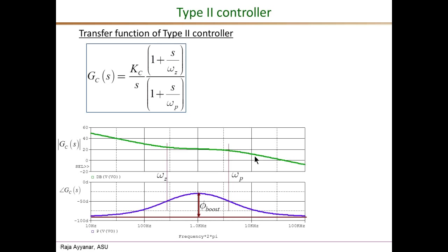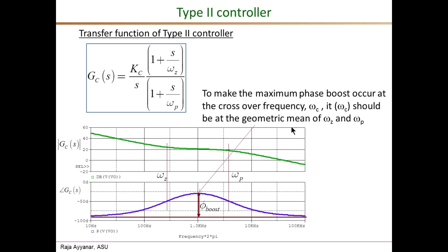The pole eventually adds another minus 20 dB, and at high frequency the magnitude comes down at a slope of minus 20 dB per decade. Looking at the phase plot, at low frequencies well below omega_z the phase angle is minus 90 degrees. The zero tries to bring it up towards zero degrees, but before it can actually reach zero, the effect of the follow-on pole comes into play and the phase drops back, returning to minus 90 degrees at high frequencies.